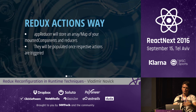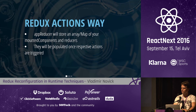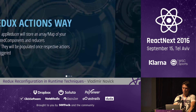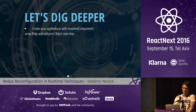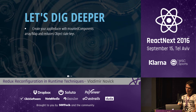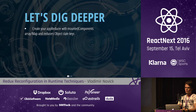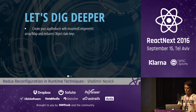The reducers array or map will be populated once the respective actions are triggered. What are the steps to creating such behavior? First of all, you create an app reducer with a mounted components array/map and a reducer object for state keys.